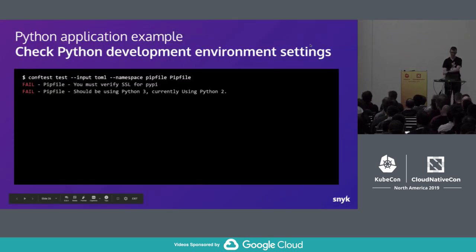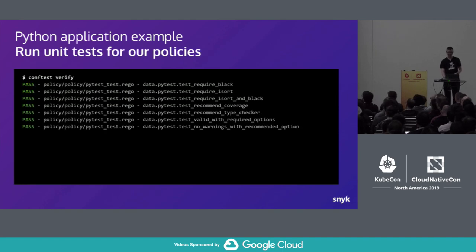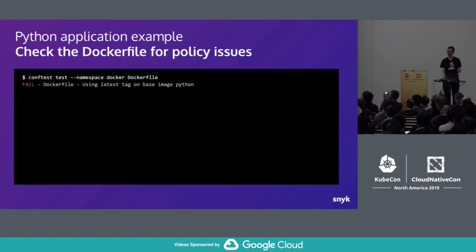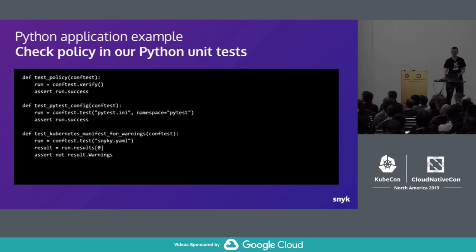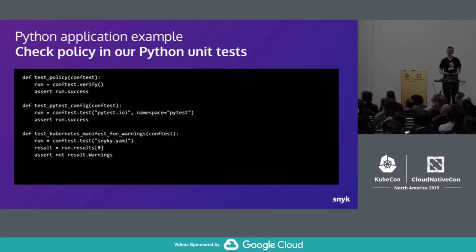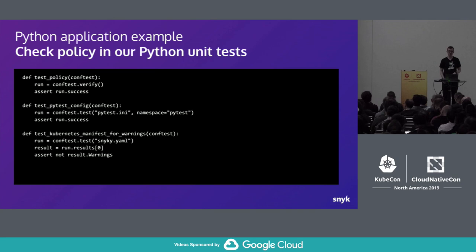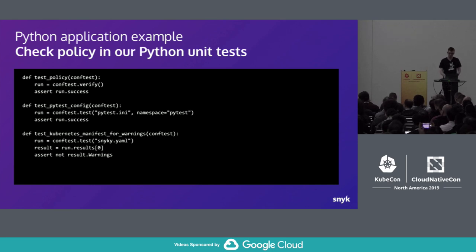Think of all those configuration files that you have in your repos scattered around. Think of all the things that you know are the right thing to do but you probably don't know whether you do them everywhere. Suddenly you've got a very general purpose tool that can take any of those input formats and start reasoning about them. Conftest also has a Python library. If someone says they don't want another tool, they already have a testing tool — you can actually just use Conftest as a library in Python unit tests. You're still writing your tests in Rego, but your test runner is now the thing you're already running in your CI system.